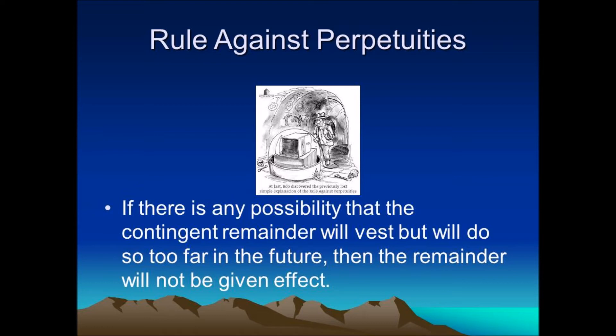The Rule Against Perpetuities states: no interest in property is valid unless it must vest, if at all, not later than 21 years after one or more lives in being at the creation of the interest. Put more affirmatively: an interest is void if there is any possibility, however remote, that the interest may vest more than 21 years after some life in being at the creation of the interest.